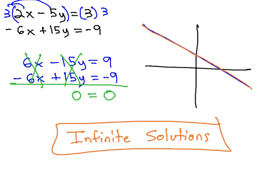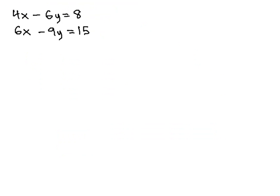This isn't the only funny thing that can happen, though. Let's take a look at another example. Here, we have 4x minus 6y equals 8, and 6x minus 9y equals 15.